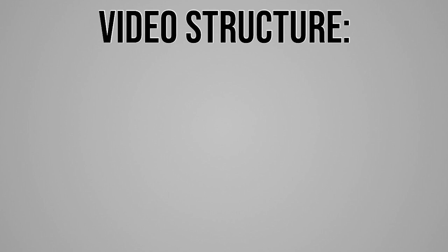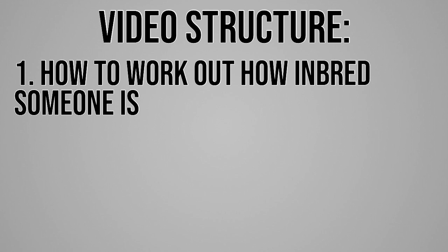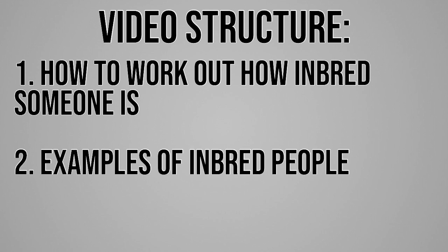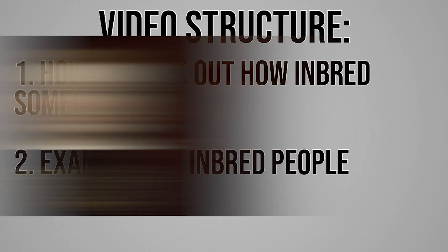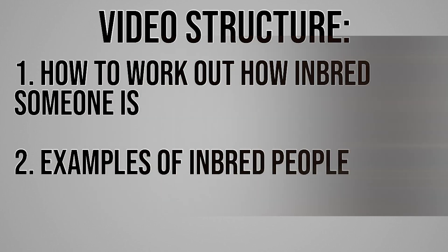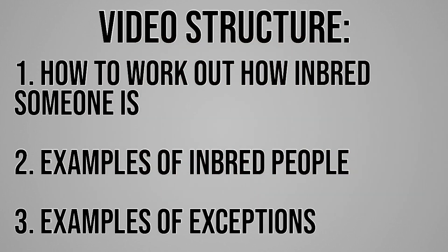Before we officially commence, let me explain the video's tripartite structure. The first segment investigates the consanguinity coefficient, which is the calculation to determine how inbred someone is. The second section applies this finding to people in history who have severe effects of inbreeding while having a high consanguinity coefficient — in particular, the Habsburgs. The third and final section will reveal individuals in history who displayed critically high consanguinity coefficients yet lived relatively healthy lives, uncovering how inbreeding is simply a genetic lottery, although an important one.